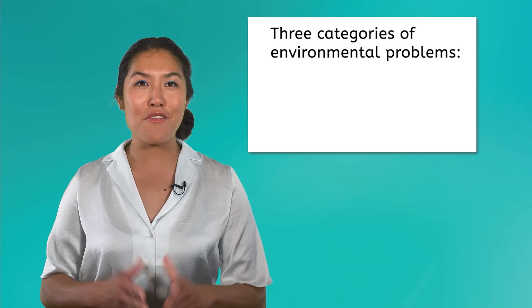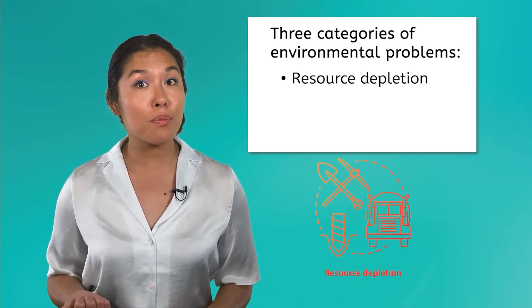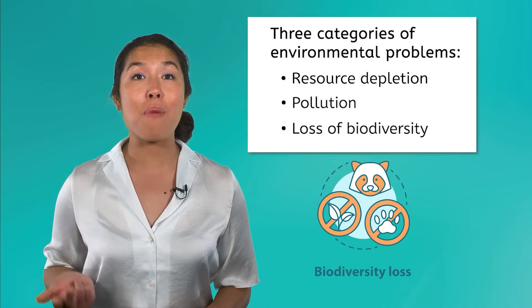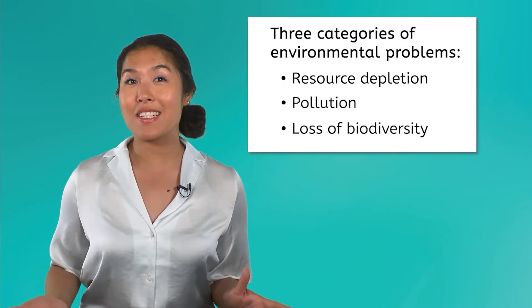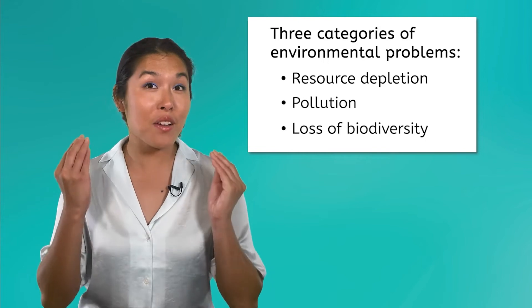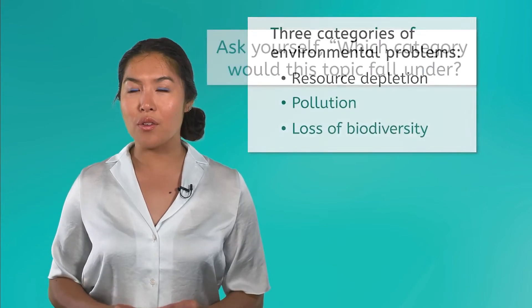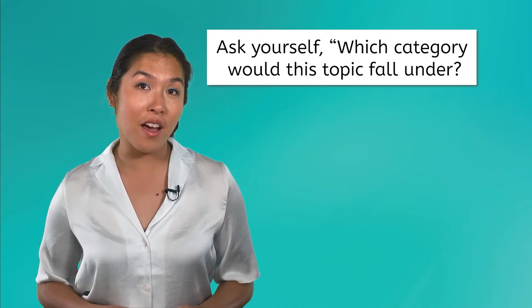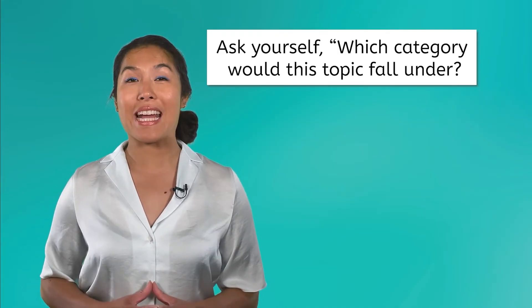As we move through this course, our focus will move between the biological, the chemical, the social science, and the humanities areas of environmental science. Throughout all of these foci, it is important to have a common lens in which to view our lessons. In this course, we will focus on three main categories of environmental problems: resource depletion, pollution, and the loss of biodiversity. When we are discussing a topic, I want you to have in the back of your mind these categories and ask yourself, which category would this topic fall under? This will help center your learning in this course.